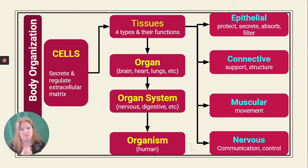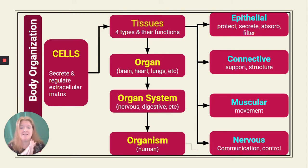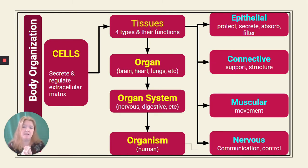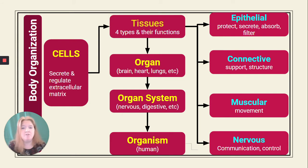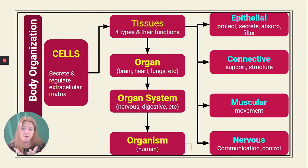Let's break it down. Here's body organization — we're going to go through the flow of organization, and then focus on tissues. First, we have cells. Cells are the smallest unit of life, the smallest thing that is alive. Cells are made of organelles, but the organelles themselves are not alive. Cells do their cell job — brain cells, liver cells, skin cells — they also secrete and regulate the extracellular matrix, the stuff outside of them. Groups of cells that function in a similar way make up tissues — four types, which we'll talk about next.